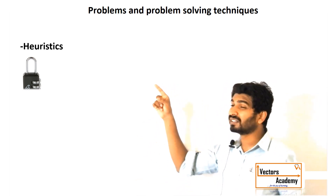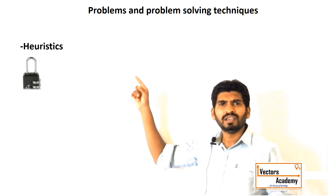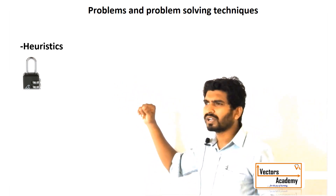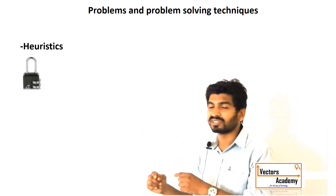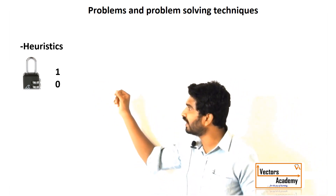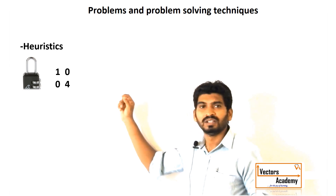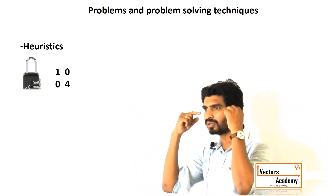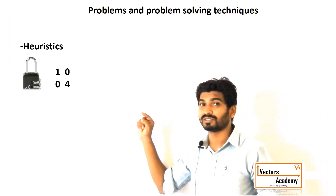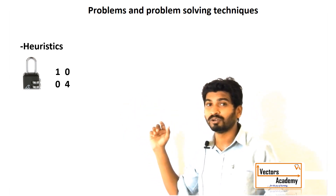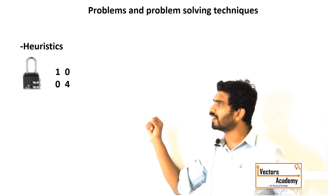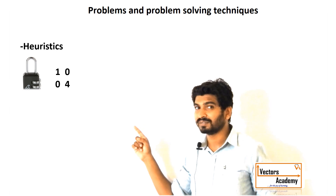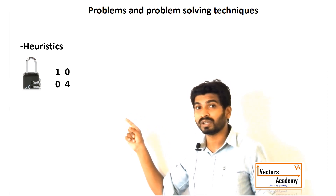The second technique is heuristics, which is easier but does not guarantee an answer. For example, if I know whose lock it is, I'll try combinations like their birthday — say the 10th of March, I'll try 10 then 04. I only try likely combinations rather than all of them. If I get an answer it will be much quicker than the algorithm.